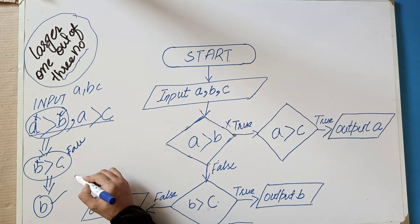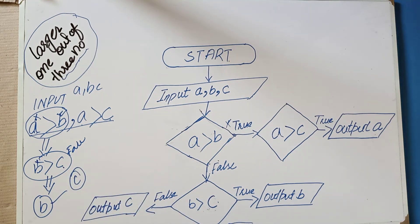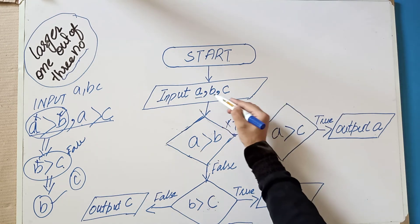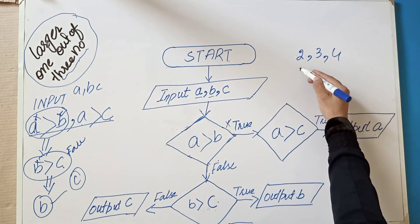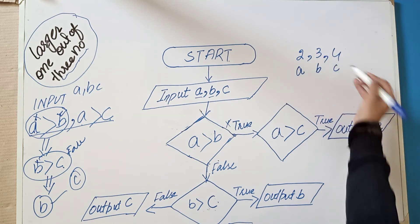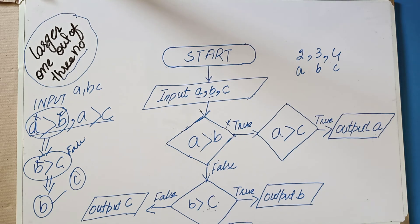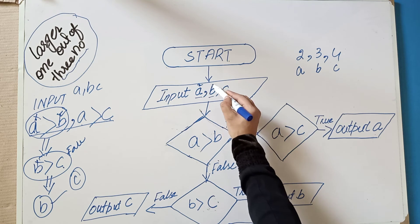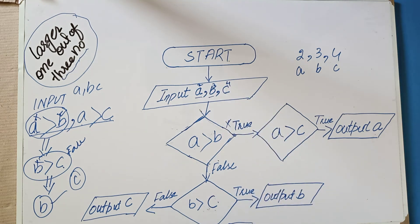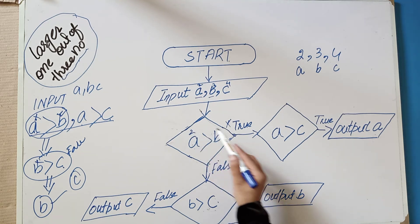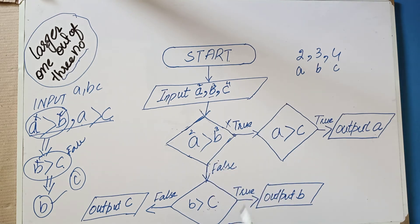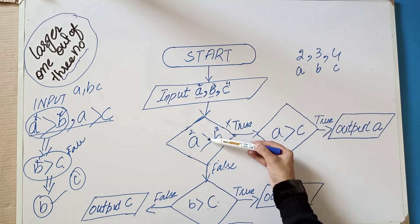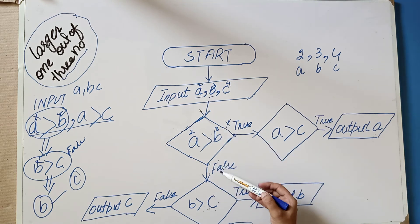Let's trace through an example: A value is 2, B value is 3, and C value is 4. We will execute this. A is 2, B is 3. Is 2 greater than 3? False. So we continue downward.